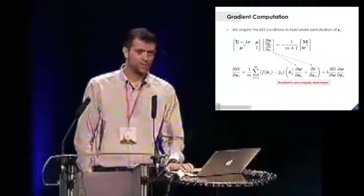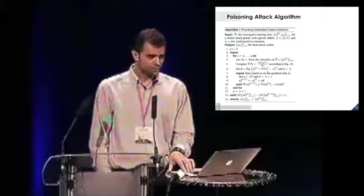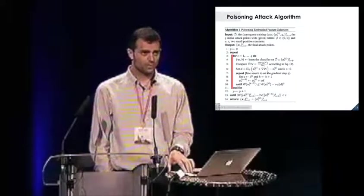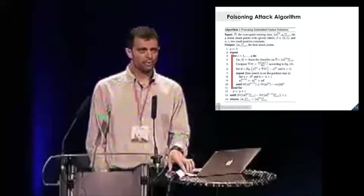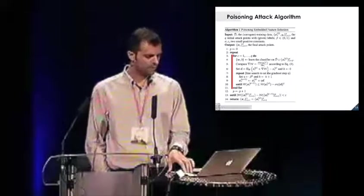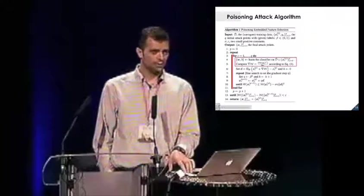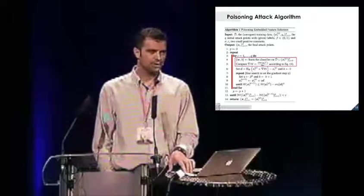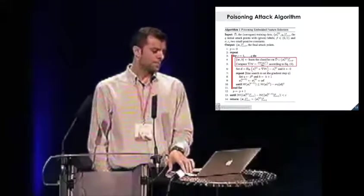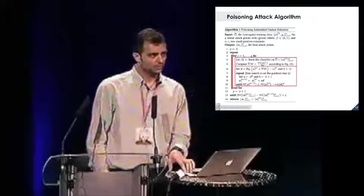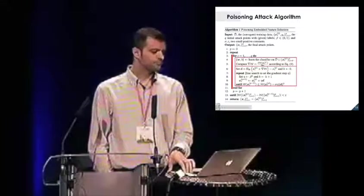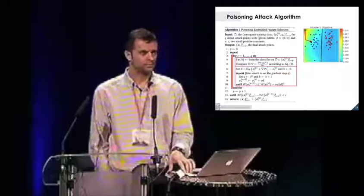Now we have the gradient, so we can briefly sketch the algorithm. The idea here is not to consider only one point at a time, but to consider Q attack points simultaneously. So this is a loop over the attack points. Iteratively, we consider one attack point at a time. What we do is we update the model incorporating the attack points and compute the gradient, as I showed before. Then we use just a simple line search to find the gradient step size.